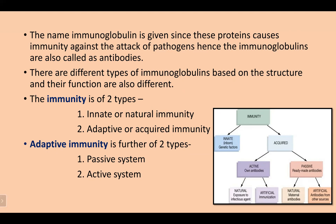Immunity is of two types: innate or natural immunity, and adaptive or acquired immunity. Adaptive immunity is further of two types: passive immunity or active immunity.